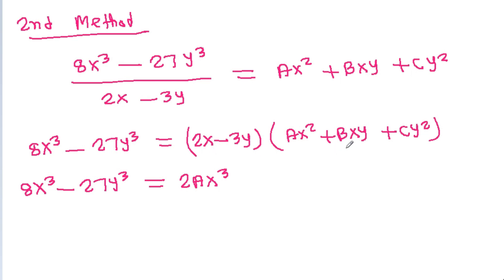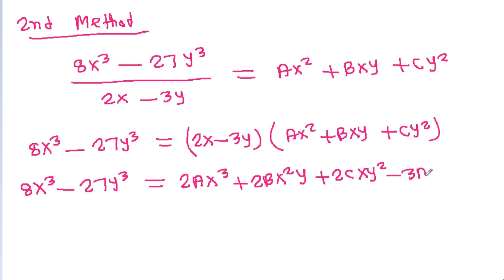2x times bxy is 2bx²y, and 2x times cy² is 2cxy². Minus 3y times ax² is -3ax²y, and minus 3y times bxy is -3bxy², and minus 3y times cy² is -3cy³.